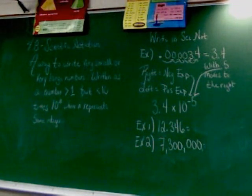There's one new concept, but even that's not going to be a big deal. So, start with the definition of scientific notation, a way to write very small or very large numbers written as a number greater than 1 but less than 10 times 10 to the n.